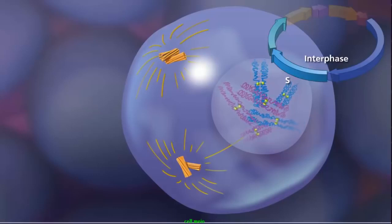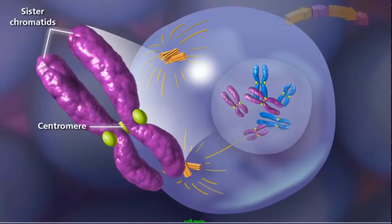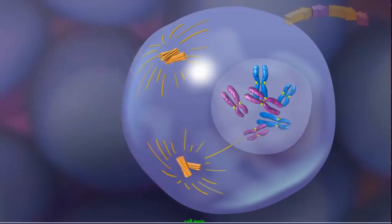Sister chromatids remain attached at the centromere and condense as the cell enters prophase I of meiosis. Up to this point, the cell looks similar to mitosis, but two events occur in meiosis that do not occur in mitosis and lead to genetic diversity.